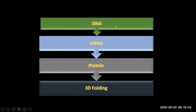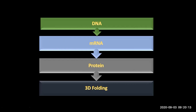When messenger RNA was created, that process was transcription. And when the messenger RNA was used to create the polypeptide chain, that process is called translation. After translation, three-dimensional folding happens mostly in the rough endoplasmic reticulum, and final packaging takes place in the Golgi complex.